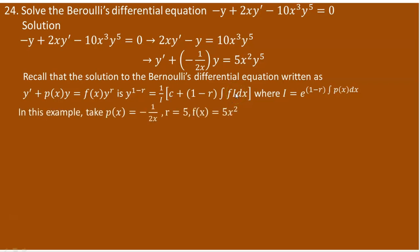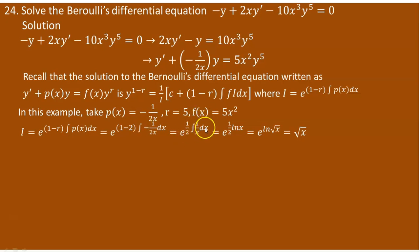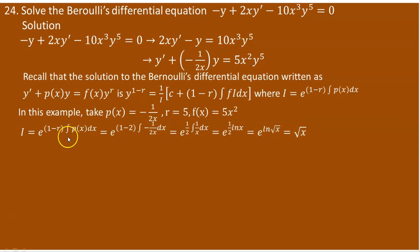Let's determine I. Here r equals 2, so I equals e to the power of (1 minus 2) times the integral of p(x) dx, which is e to the power of negative times the integral of negative 1 over 2x dx. The negatives cancel, giving e to the power of 1/2 times the integral of 1/x dx. Since the integral of 1/x is ln(x), this becomes e to the power of (1/2)ln(x), and the 1/2 exponent gives the square root of x. So I equals the square root of x.